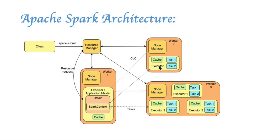The executors directly communicate with the driver, and the driver keeps track of all the statuses of the executors. When the task is completed, the Spark context is closed and the driver exits. This causes the application master to terminate, thus releasing the resources back to the cluster.